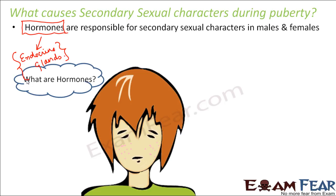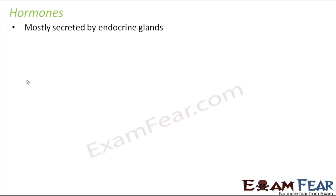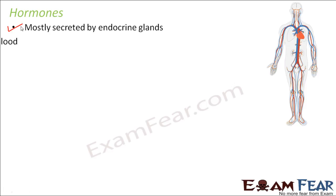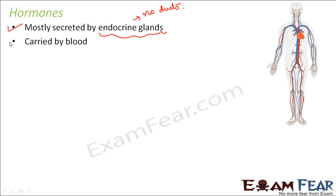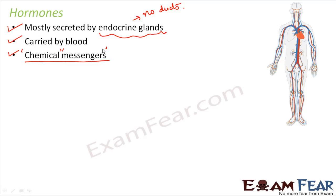Let us spend some time understanding hormones. Hormones are mostly secreted by endocrine glands and are carried by blood, because endocrine glands do not have ducts — there are no tube-like structures — so their secretion directly enters the bloodstream and blood carries it to different parts of the body. They are called chemical messengers because they are chemical substances that send information from one part of the body to another. Once released into the blood, they are carried from one part to another, conveying information. Since they are chemical substances acting as messengers, they are called chemical messengers.